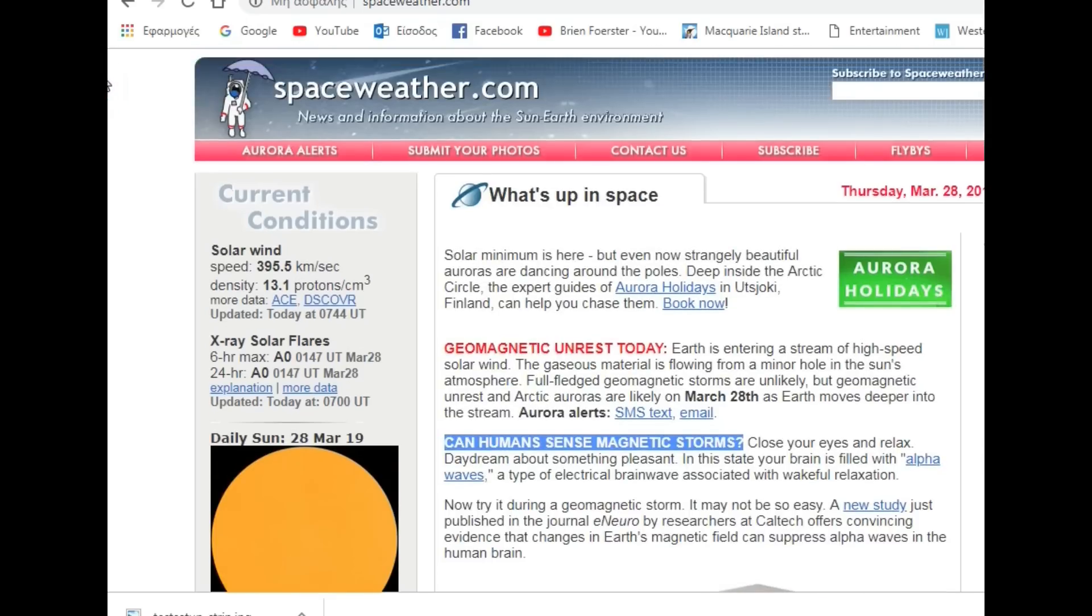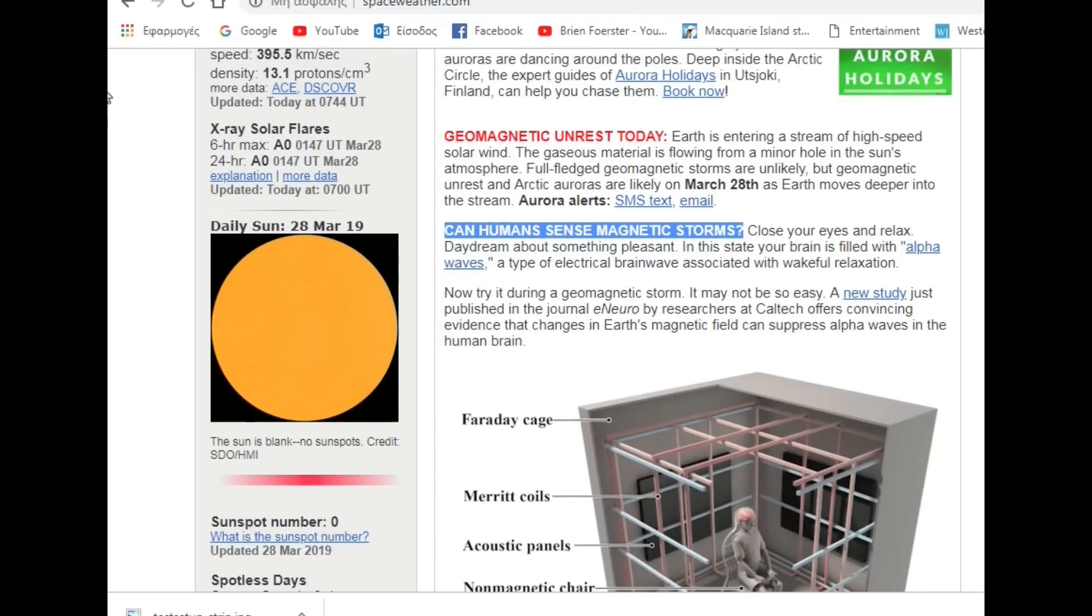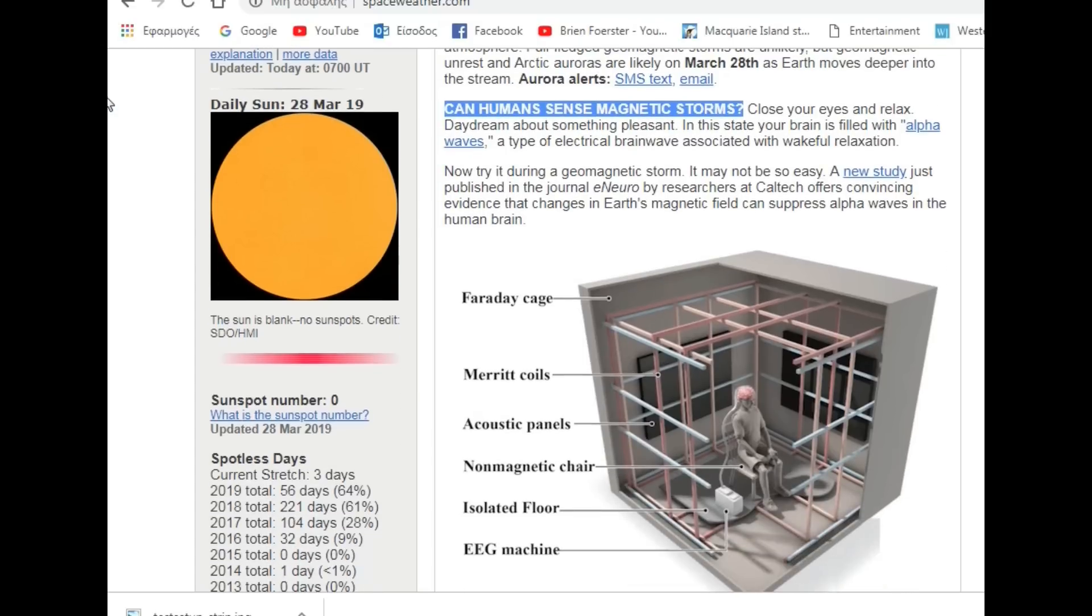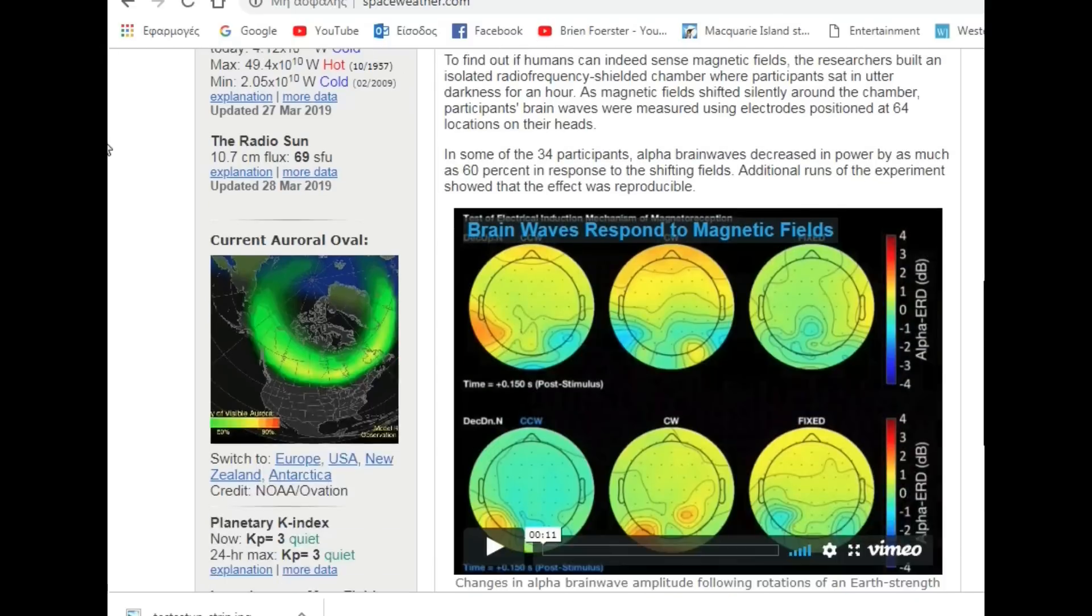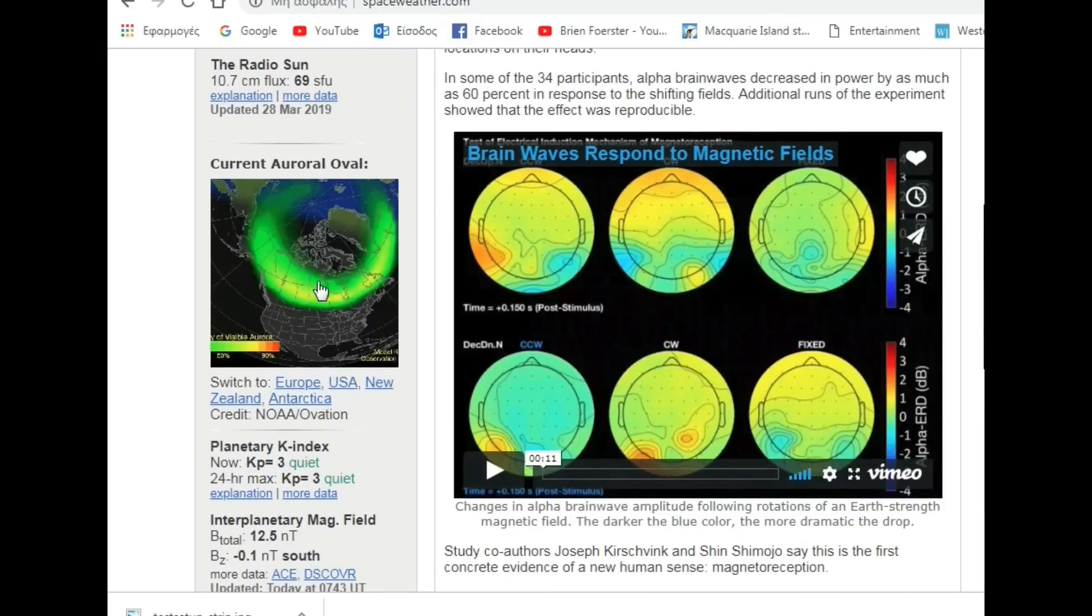Here we are on the space weather site. Geomagnetic unrest today. Earth is entering a stream of high-speed solar wind, gaseous material flowing from a minor hole in the sun's atmosphere. Full-fledged geomagnetic storms are unlikely but geomagnetic unrest. Arctic auroras are likely March 28th today. And here we are. Look at that. How beautiful and strong that is. That's pretty much north of Montreal and at the border of the United States. This looks to me stronger than it was yesterday.